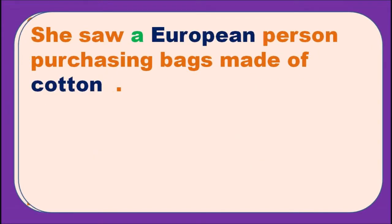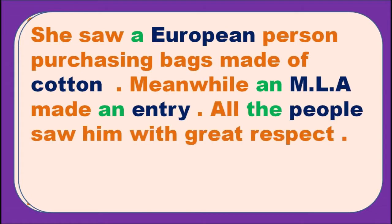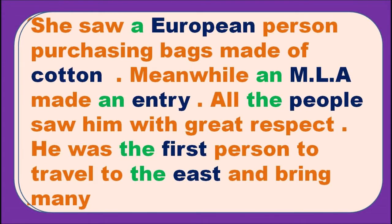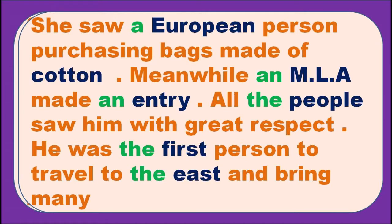She saw a European person purchasing bags made of cotton. Meanwhile an MLA made an entry. All the people saw him with great respect. He was the first person to travel to the east and bring many a European here. The pronunciation of 'European' is 'yoo-ropean' — though it starts with E, its pronunciation begins with a consonant sound, that is why we use 'a.' Cotton is a material noun, so no article is used.